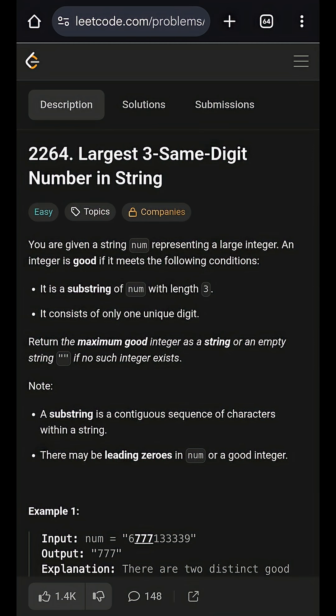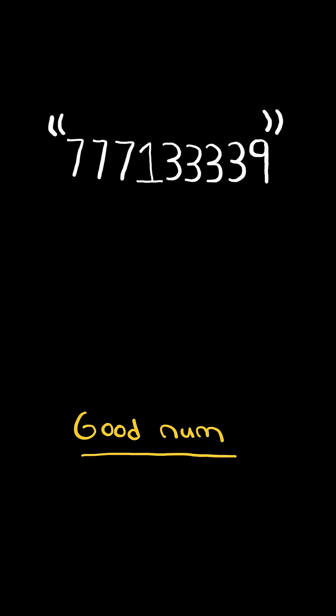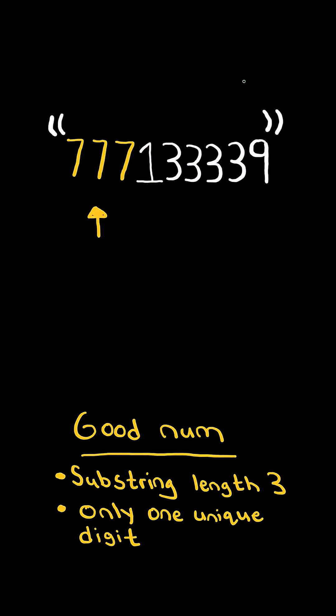Largest three same digit number in string. A good number is defined as a substring of length three and consists of only one unique digit. For example, 777 is a good number since it has length three and only consists of one unique number, seven. 333 is also a good number. Return the maximum good number as a string.